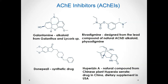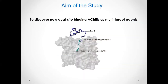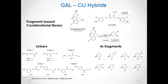The existing drugs are not without side effects, so the search for new acetylcholinesterase inhibitors continues. The aim of this study is to discover new compounds with dual binding to acetylcholinesterase with potential multi-target action. We designed hybrids between galantamine and curcumin, since curcumin is known as a strong inhibitor of amyloid aggregation. We designed a fragment-based combinatorial library of 72 hybrid molecules by combining nine linkers and eight aromatic fragments, where the linkers and fragments mimic parts of the curcumin structure.